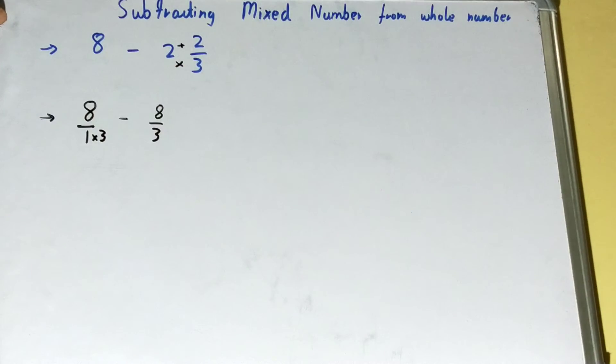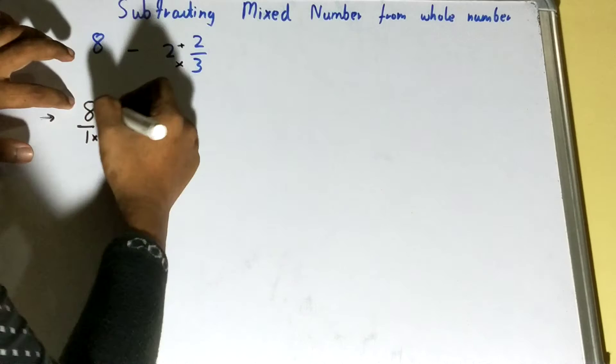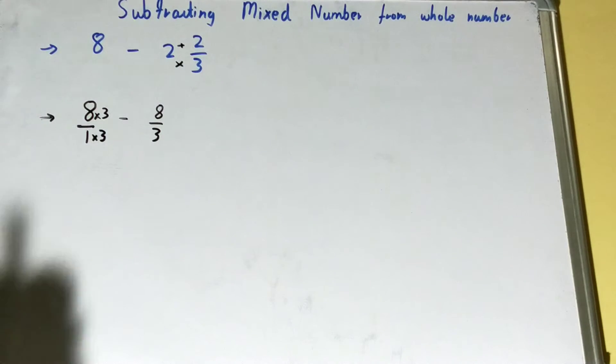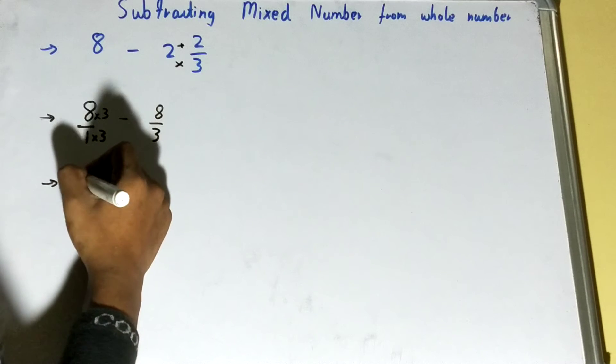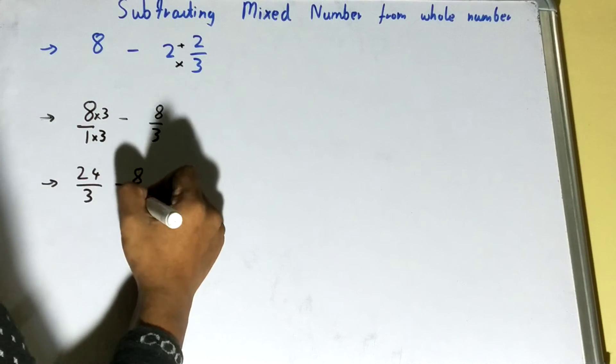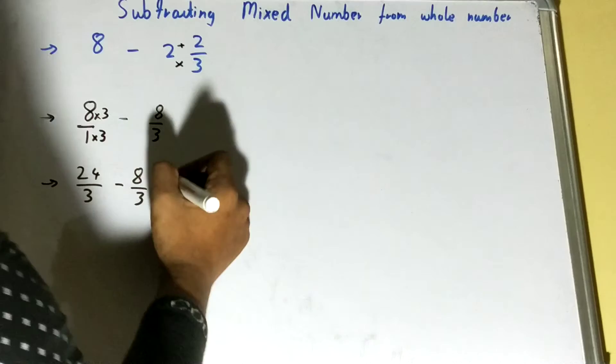But the rule says if you multiply the denominator by 3, you need to multiply the numerator by 3 like this. So further on, it will be 24 upon 3 minus 8 upon 3. Now because they are on the same denominator, we can subtract on a common plane or common fraction.